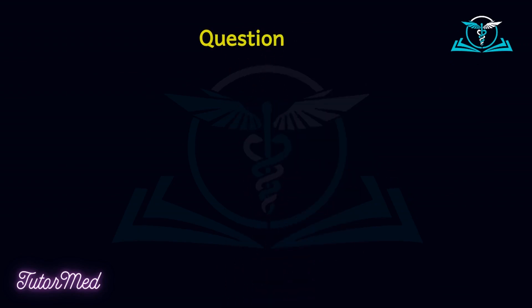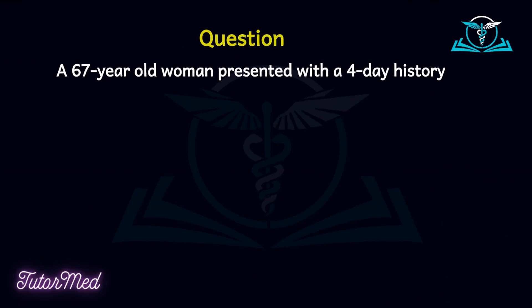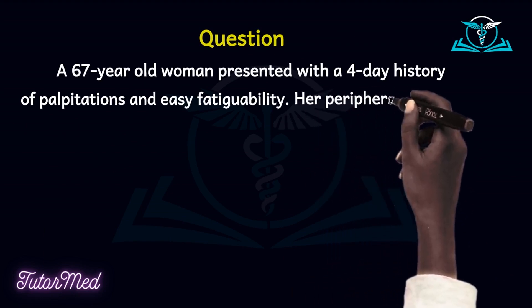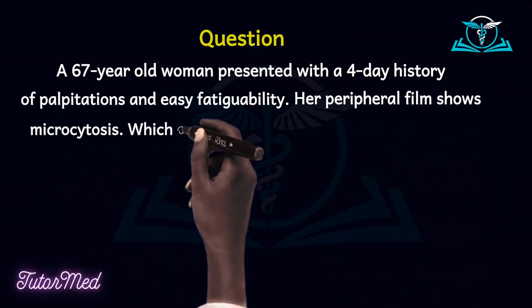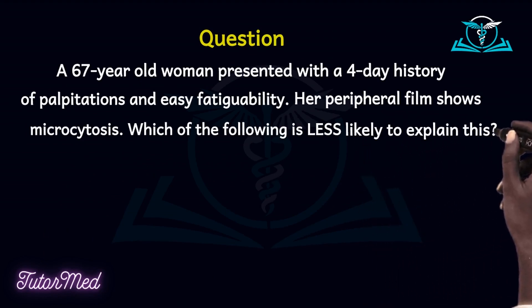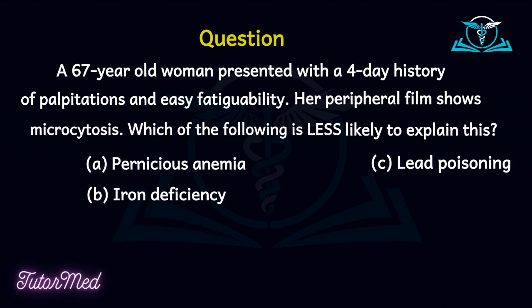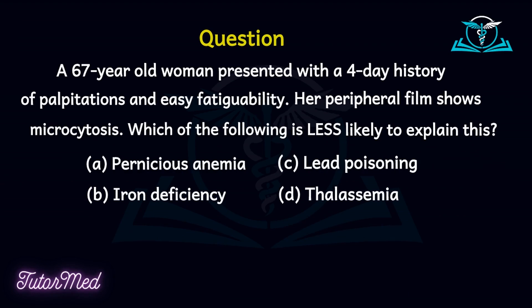Going back to the question: a 67-year-old woman presented with a four-day history of palpitations and easy fatigability. Her peripheral film shows microcytosis. Which of the following is least likely to explain this? A: pernicious anemia. B: iron deficiency anemia. C: lead poisoning. D: thalassemia. From the TAILS mnemonic, you know that the answer is rightly A. This video will begin a series where we'll use these principles of content and intent to approaching MCQs.